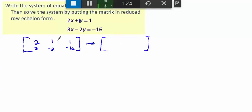So basically what we're going to do is we are going to get 1x plus 0y equals some number, and then we're going to go 0x plus 1y equals some number.